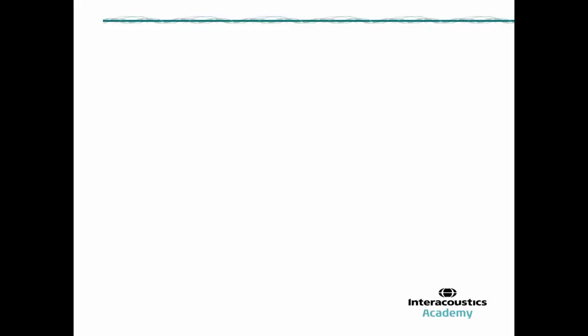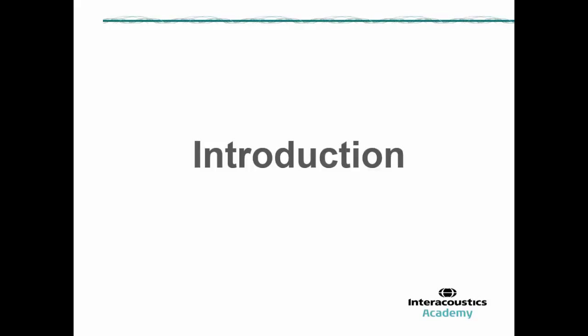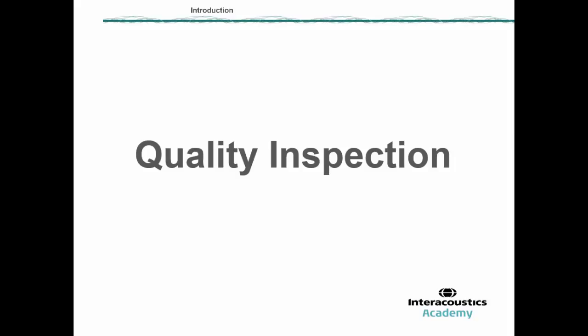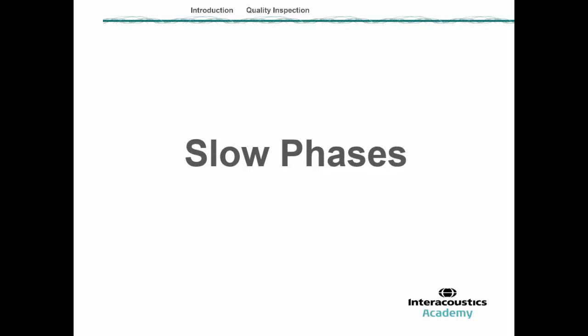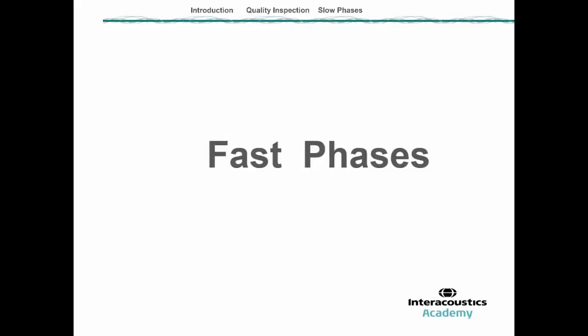The webinar is structured in several sections. First, an introduction covering the concept of the video head impulse test and the data graphs we obtain. Next, we'll discuss the quality of results, which is essential before making clinical interpretations. Then we'll address the slow phases — the true vestibular response measured by the VOR — and finally we'll look at fast phase results, which are corrective eye movements present only when there is a vestibular deficit.